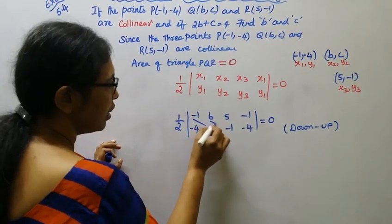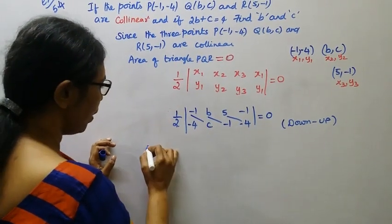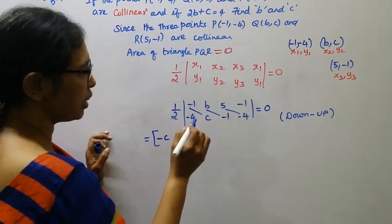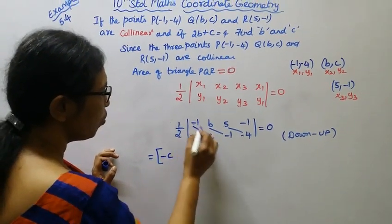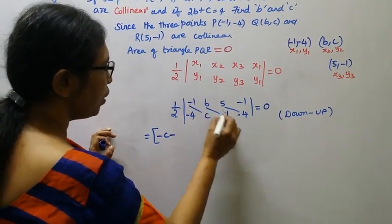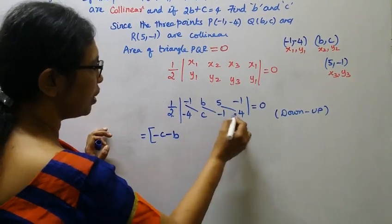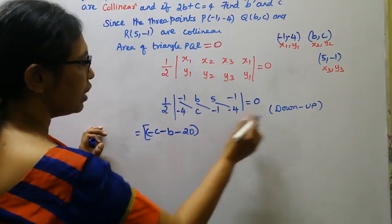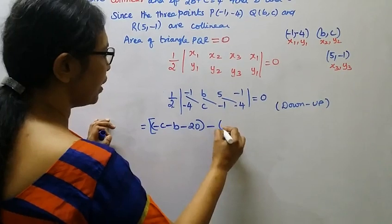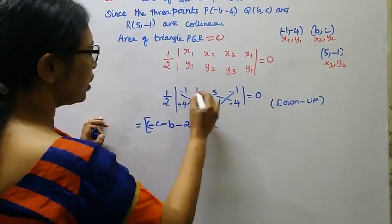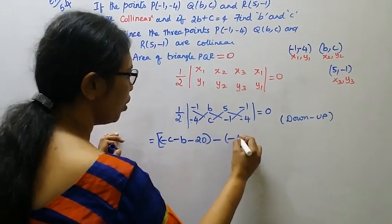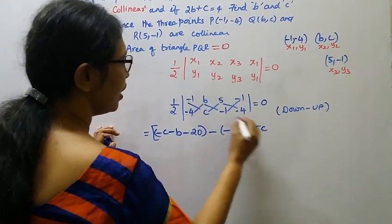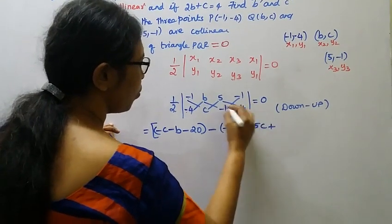Now compute the downward diagonal products: multiply (-1) into C to get minus C; then minus B into 1 gives minus B; then plus 5 into (-4) gives minus 20.